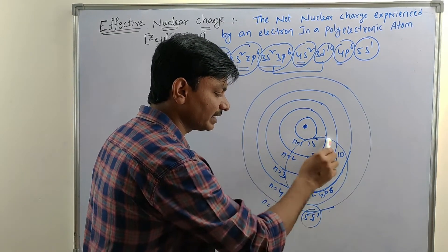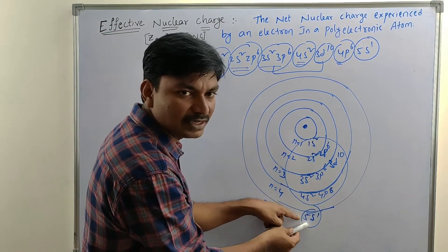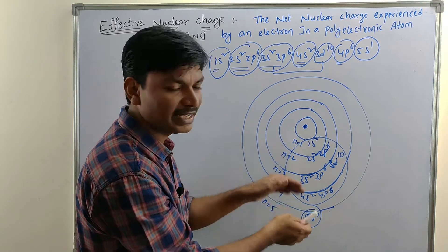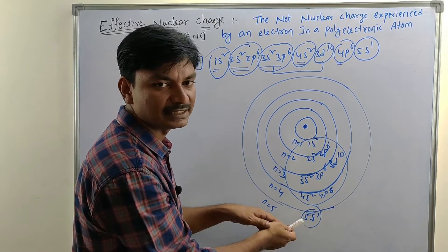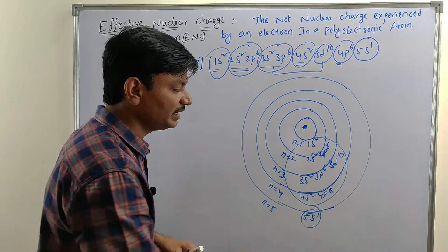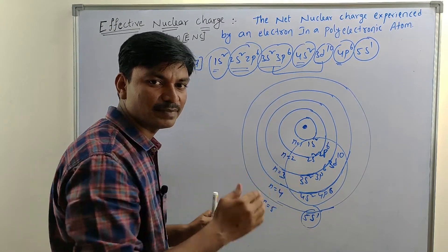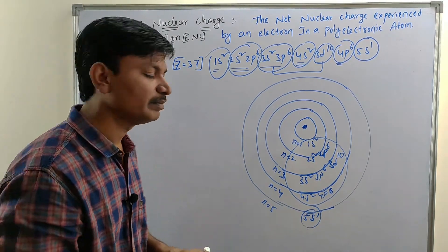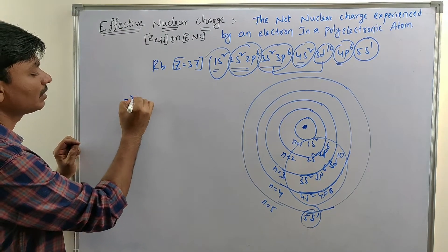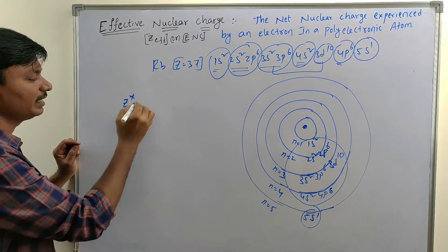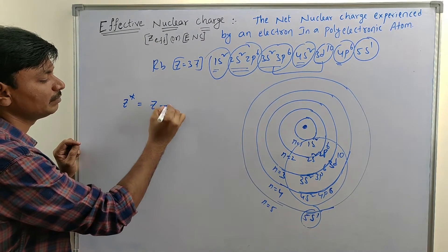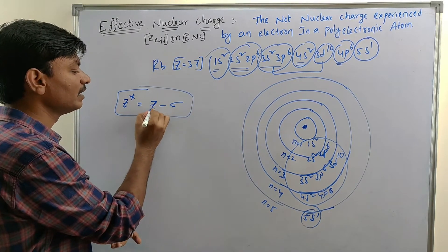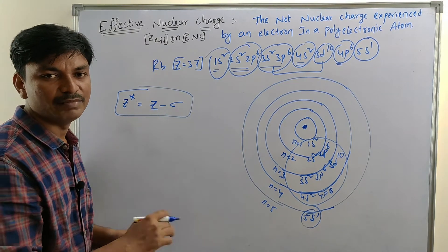Due to these inner core electrons, the nuclear force of attraction between the nucleus and valency electrons is reduced. This effect is called the screening effect or shielding effect. Due to this shielding effect, valency electrons experience less attraction force towards the nucleus, which decreases the nuclear charge. This reduced nuclear charge is expressed as effective nuclear charge, represented by Z* or Z-eff. The formula is: Z* = Z minus sigma.